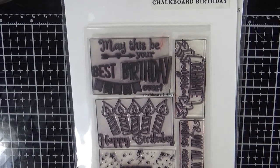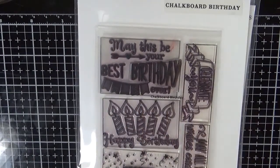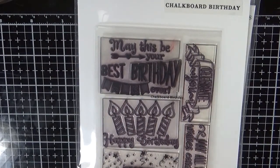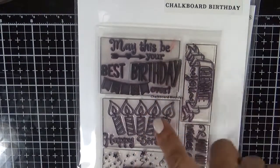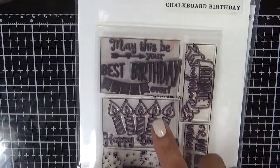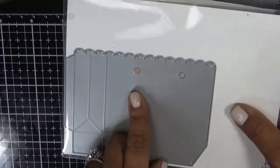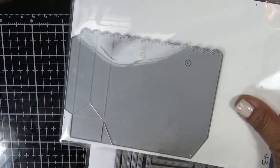For my project today, I was inspired. I have a few birthdays coming up. I'm going to use this set. It's an older set called Chalkboard Birthday. It comes with some big stamps. It has five pretty good sized stamps. They were meant to fit on the front of the coordinating gift bag die that's in the back.